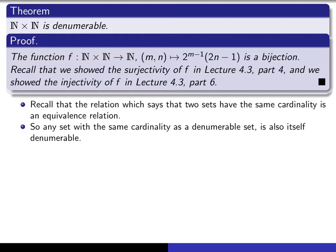And so that means that any set that is denumerable, and if you take another set having the same cardinality as the denumerable set, then it is itself a denumerable set. So that means anything that has the same cardinality as n cross n is also denumerable.